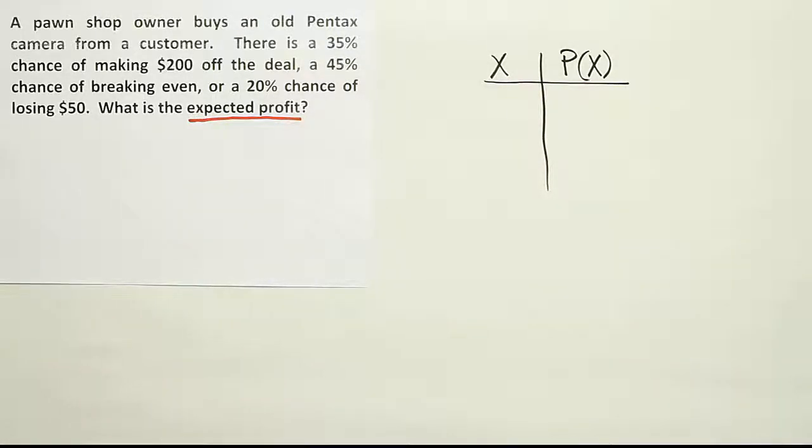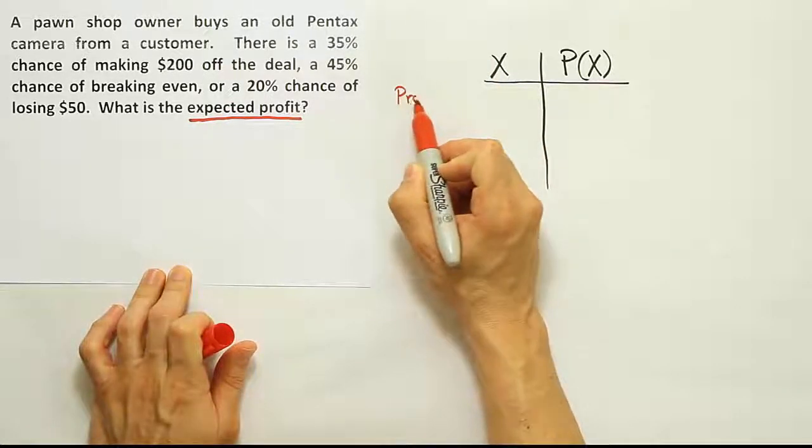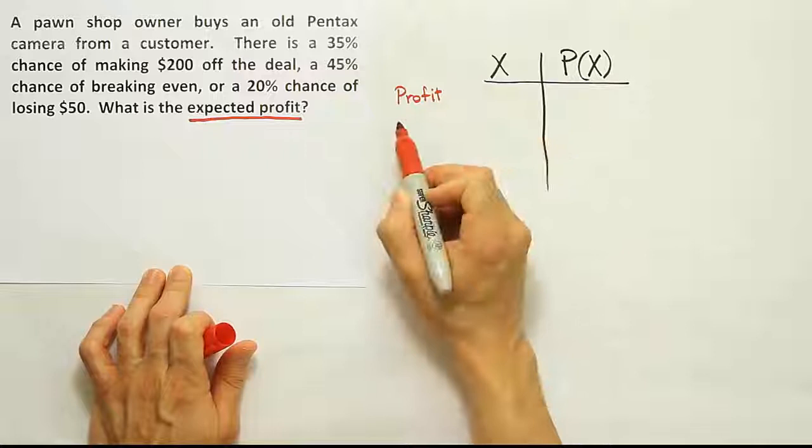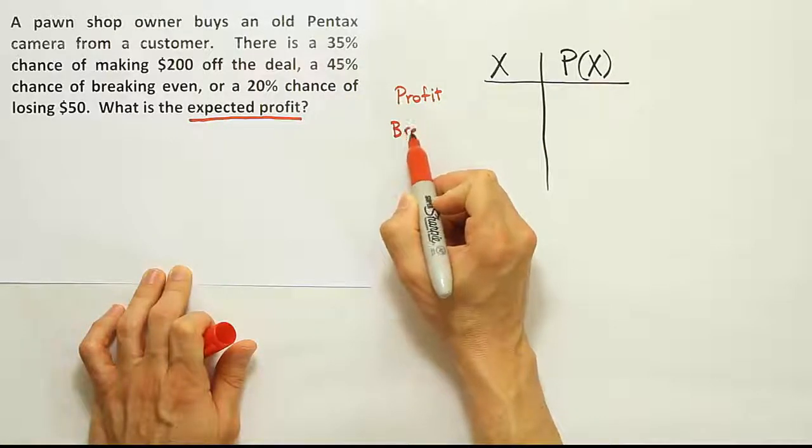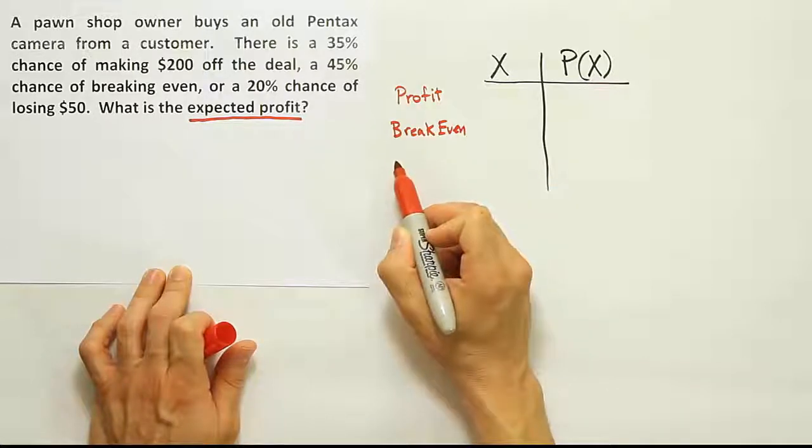Alright, now of course there are going to be different scenarios, right? The scenarios here, the controlling events, is whether you make profit, whether you break even, or whether you take a loss. So what I'm going to do is right next to the column of X, I'm going to write profit, break even, and then loss.